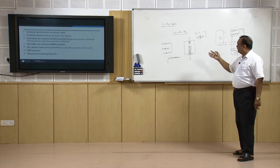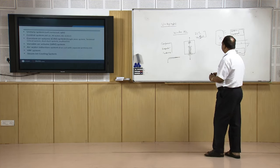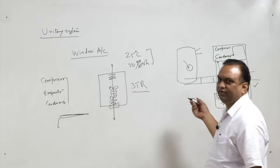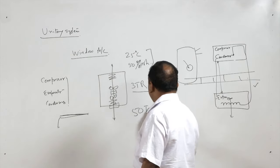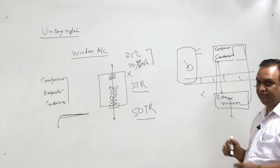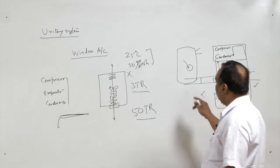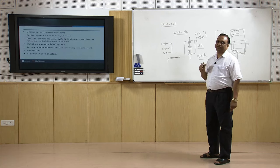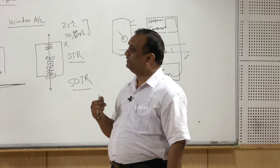Window type air conditioning systems are suitable up to about 3 tons of refrigeration. Split type systems can go for higher capacity, but for loads like 50 tons or 100 tons of refrigeration, a single unitary unit will not work. For such large loads, a central system is used.